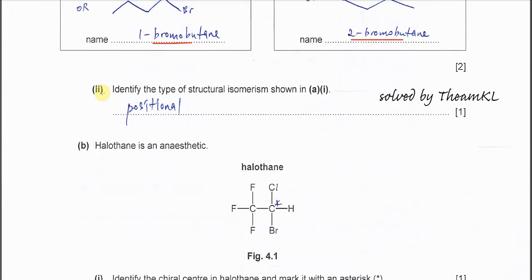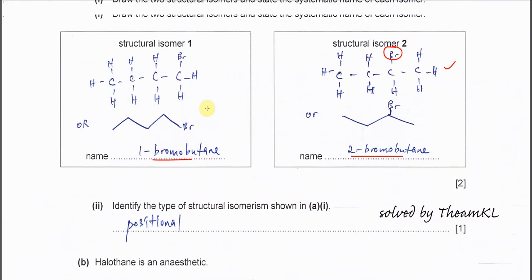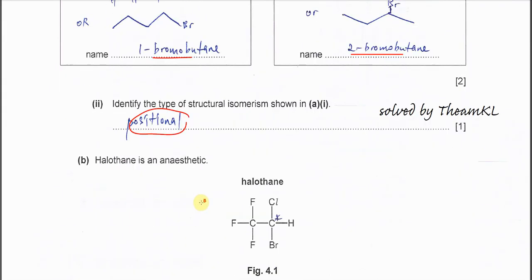Part two: Identify the type of structural isomerism. Structural isomerism has three types: positional, chain, and functional group. This one is obviously about the position of the bromine, where it's located, so it's positional isomerism.